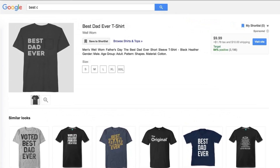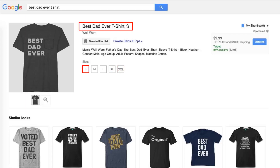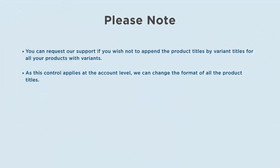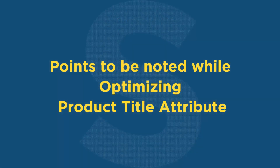Here is an example: 'Best Dad Ever T-Shirt' is the product, and it has S, M, L, XL, and double XL as variants. Each variant will be submitted as the product title followed by the variant title. Please note you can request our support if you wish not to append product titles with variant titles, as this control applies at the account level.